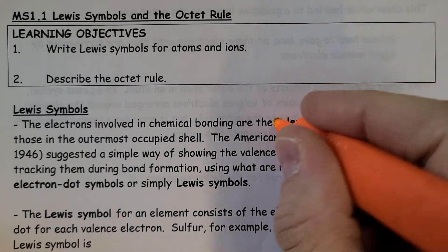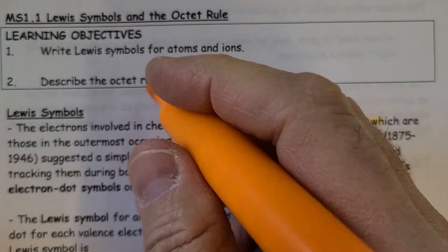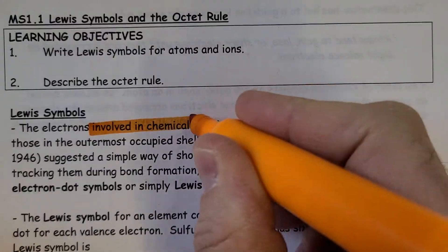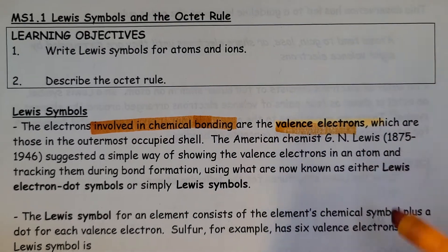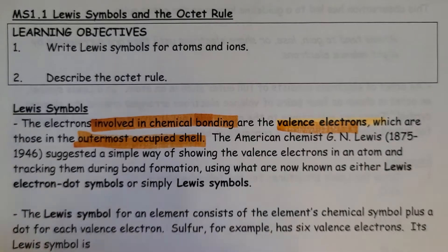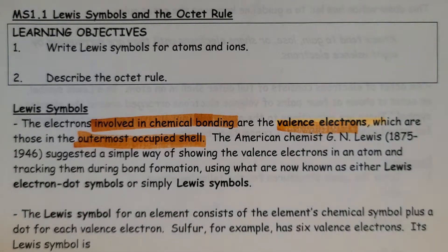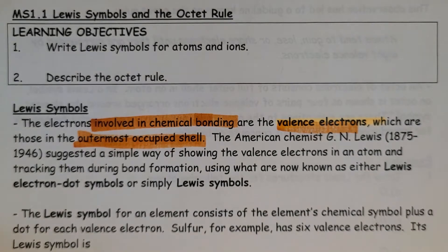Lewis symbols: The electrons involved in chemical bonding are called valence electrons. Valence electrons refers to those outer ones that are involved in bonding, which are those of the outermost shell. If you remember drawing Bohr diagrams back in the day, those ones on that outer edge are the ones involved in bonding.